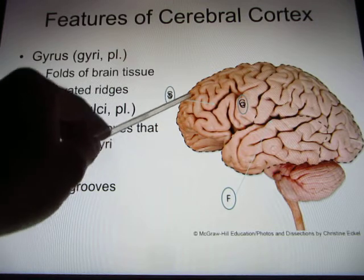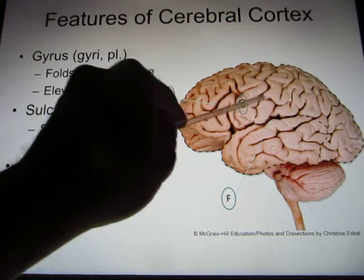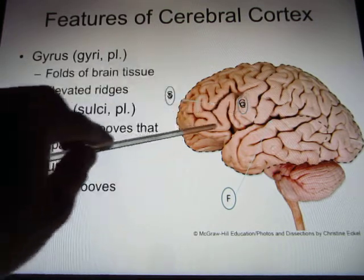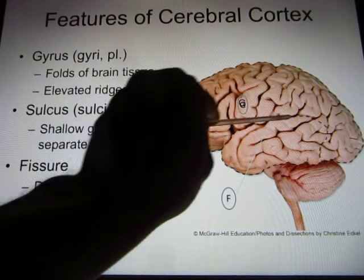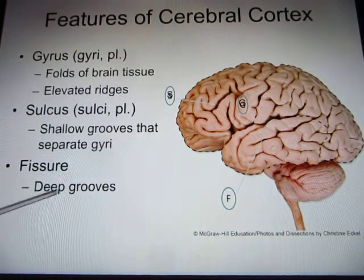So your brain has a lot of sulci and gyri alternating. And if the inward fold goes very deep, it's called a fissure.